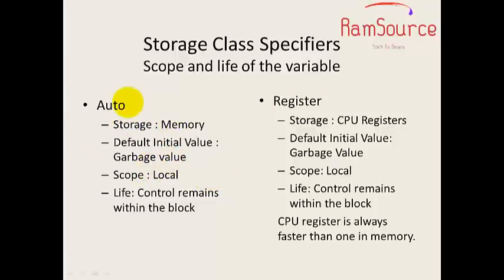Auto: Storage is in memory, the default initial value is garbage value when the user doesn't give any value. The scope is local - control remains within the block. Auto is the default storage class specifier. For register, the storage is in CPU registers with garbage default values and local scope. The main difference is that CPU register and cache memory are faster compared to physical memory.